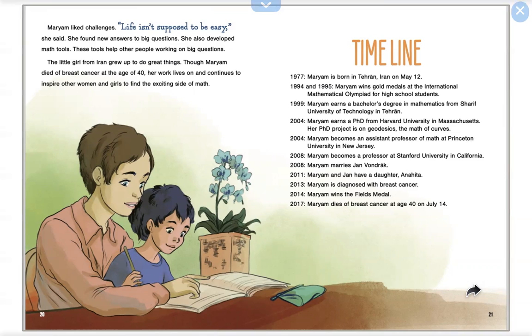2004, Maryam earns a PhD from Harvard University in Massachusetts. Her PhD is on geodesics, the math of curves. 2004, Maryam becomes an assistant professor of math at Princeton University in New Jersey. 2008, Maryam becomes a professor at Stanford University in California. 2008, Maryam marries John Vondra.